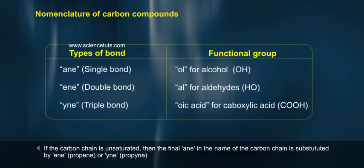Rule 4: If the carbon chain is unsaturated, then the final a-n-e in the name of the carbon chain is substituted by e-n-e (propene) or y-n-e (propyne).